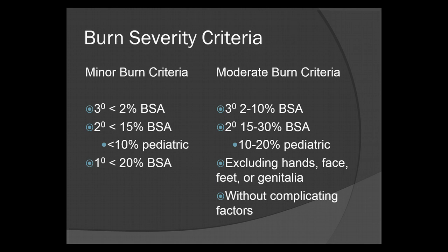Minor burn criteria: for third degree, less than 2% BSA; for second degree burns, less than 15% BSA; for pediatrics, less than 10%; and first degrees are going to be less than 20% BSA. Moderate burn criteria for a third degree burn is between 2% and 10%. Second degrees for adults fall 15% to 30%, and 10% to 20% for pediatrics. This excludes the hands, face, feet, or genitalia, and assumes no other complicating factors — which would push the patient into the critical burn criteria.